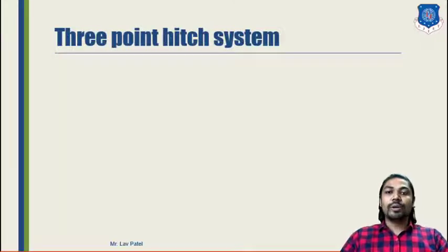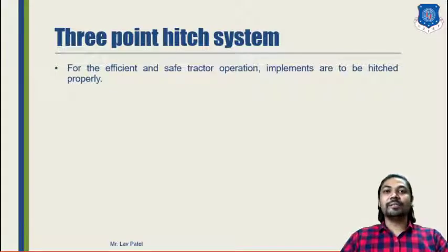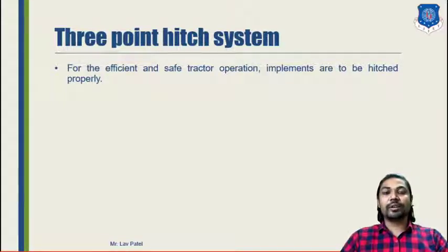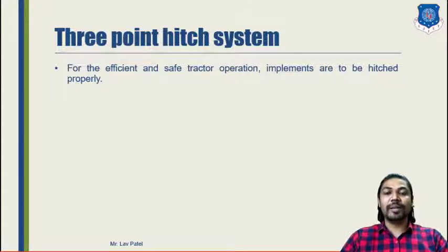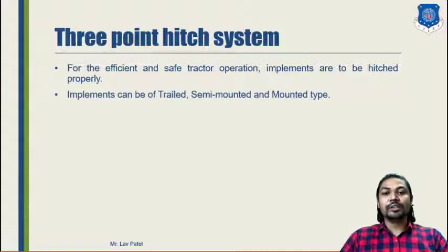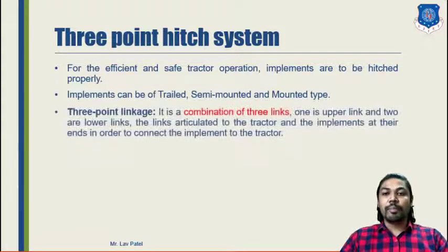Now let us talk about the second topic: the 3-point hitch system. It is a type of accessory attached at the rear portion of every tractor. If you need to attach a plow, trailer, or any other implement, this arrangement is provided in tractors. For efficient and safe tractor operation, implements or mountings must be hitched properly, and for that we use the 3-point hitch system.